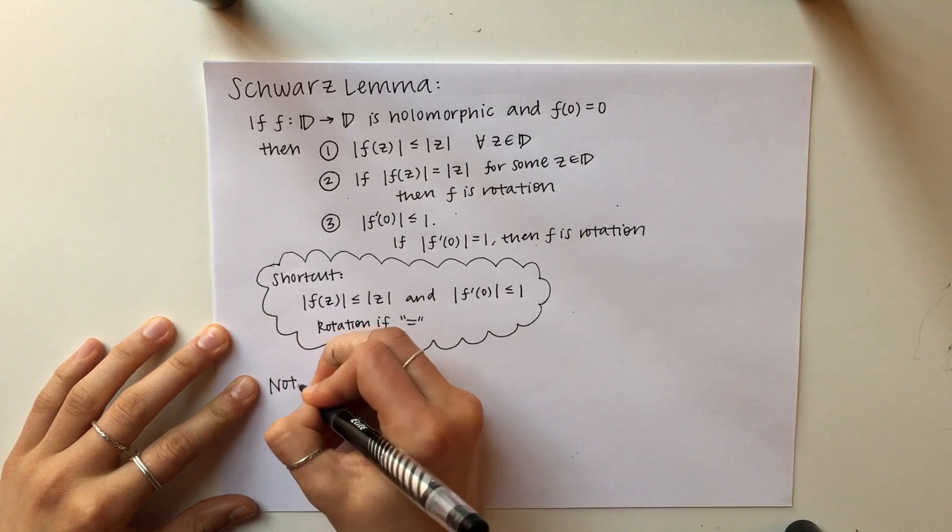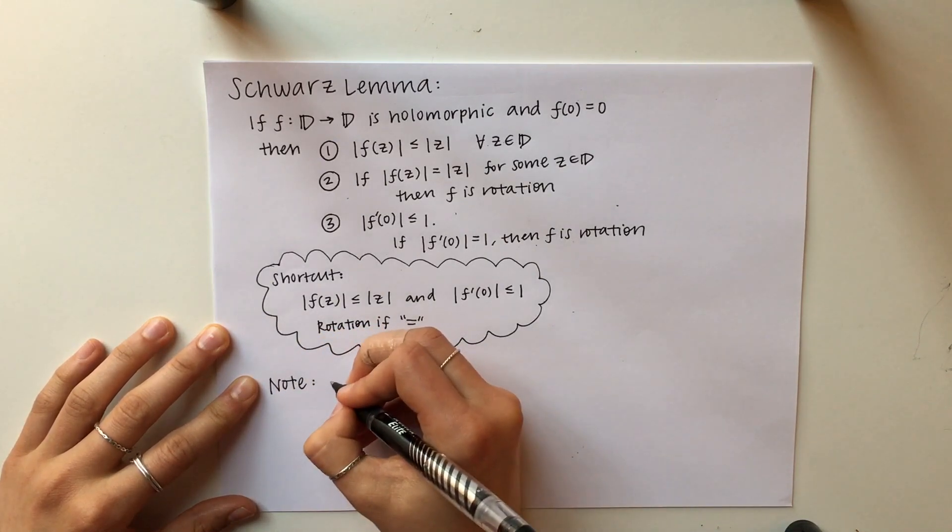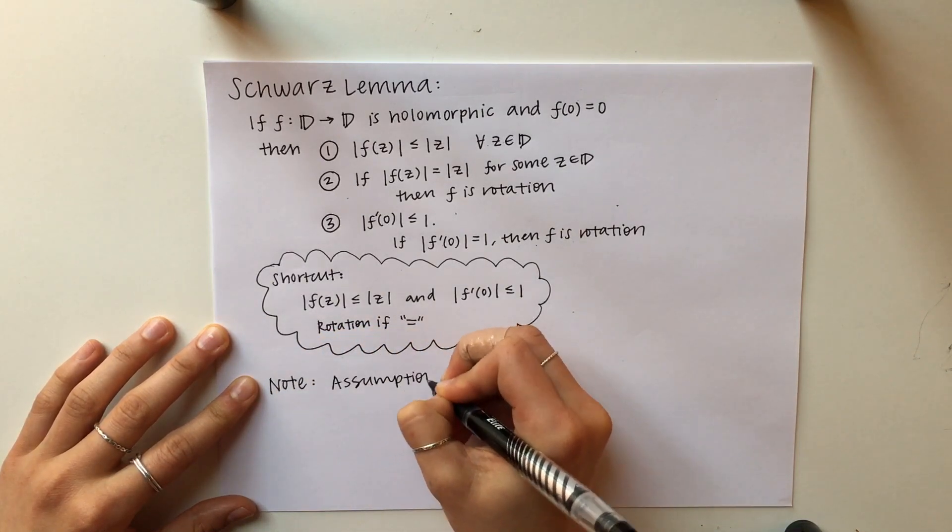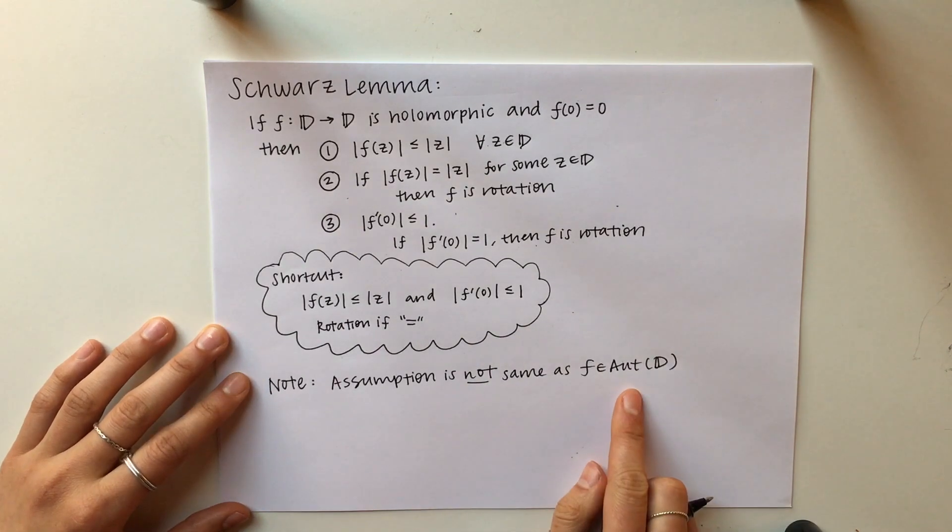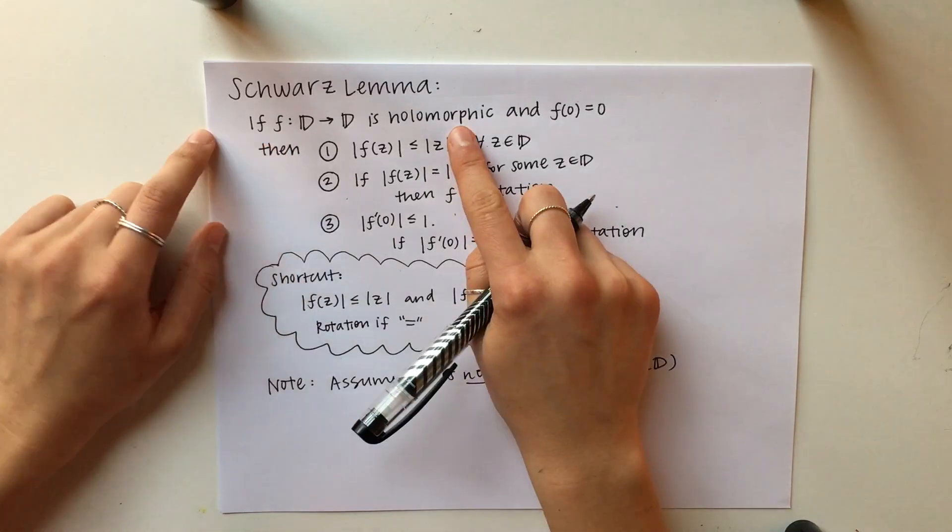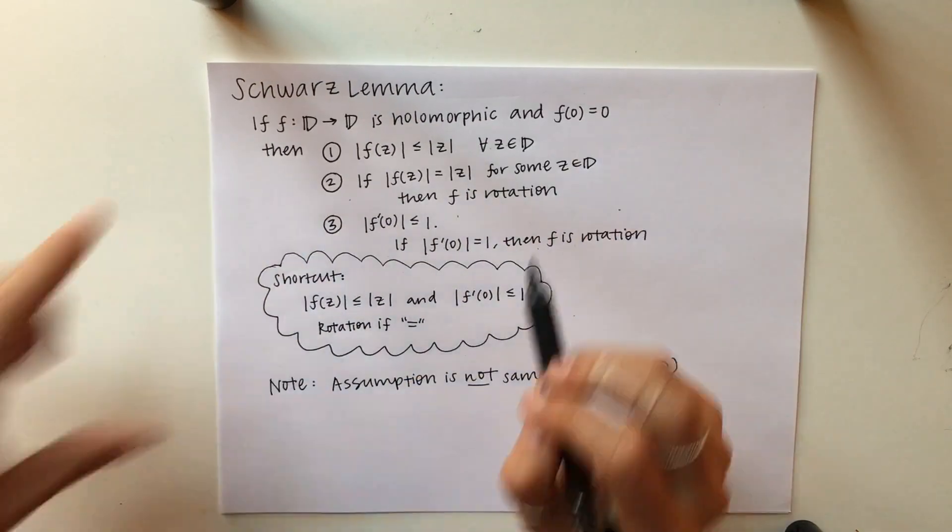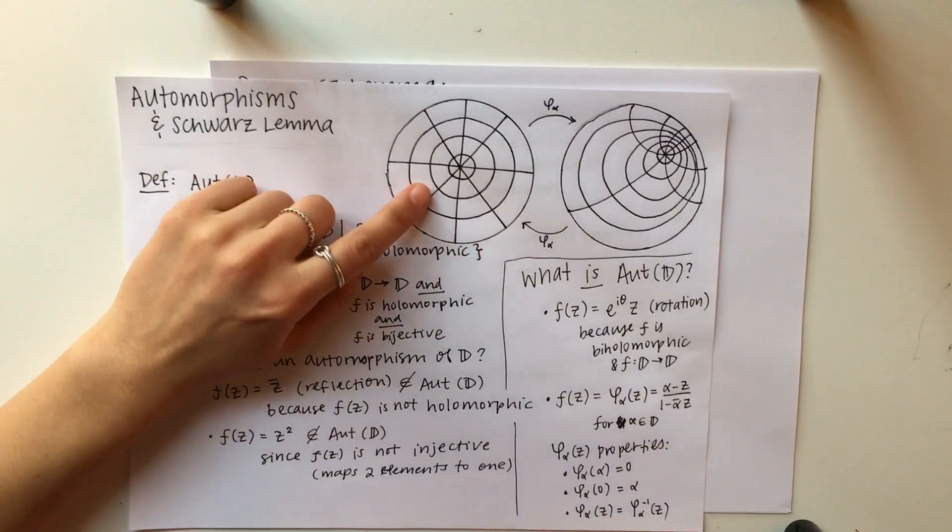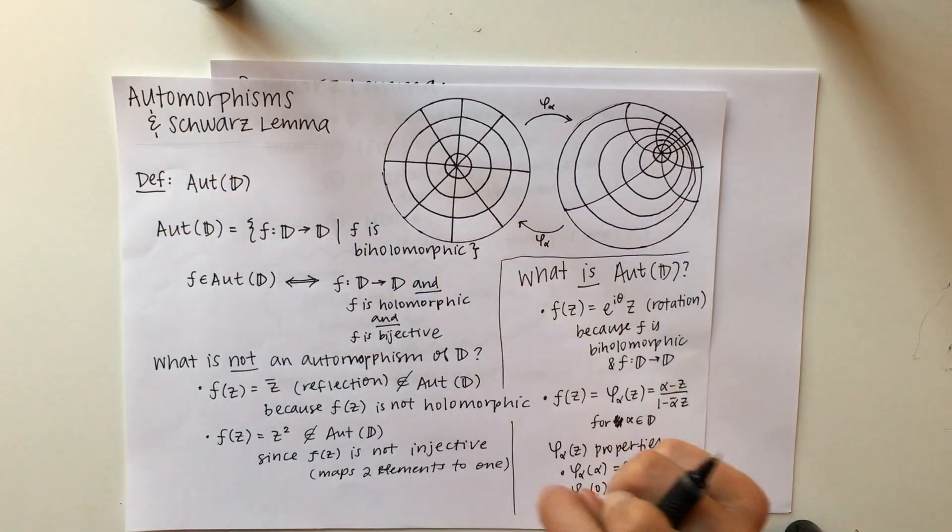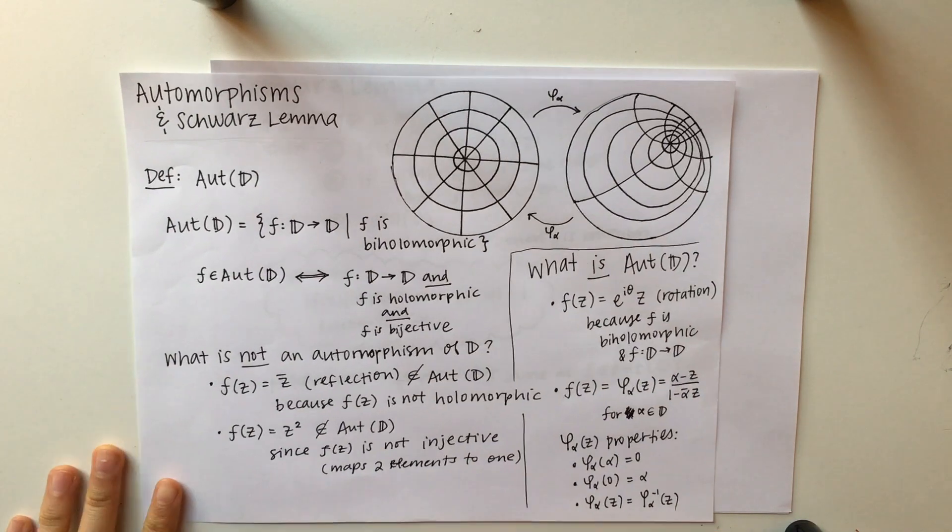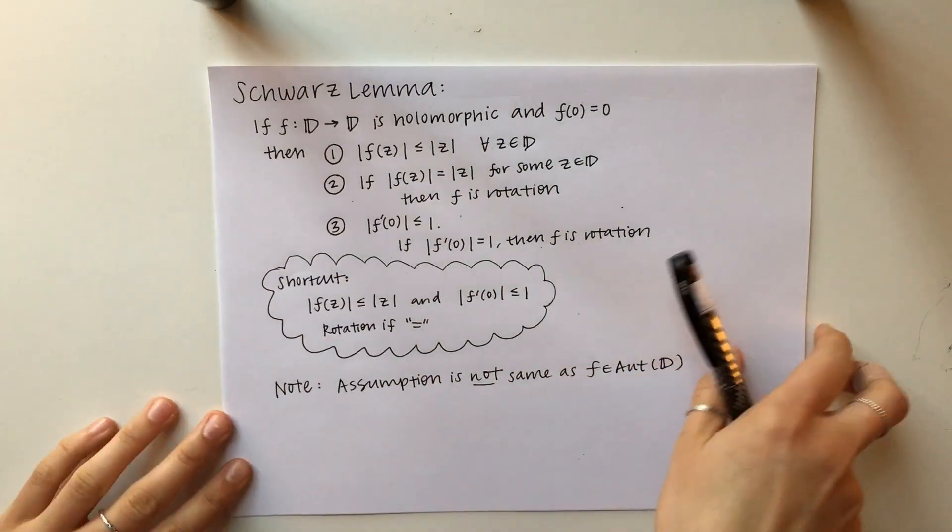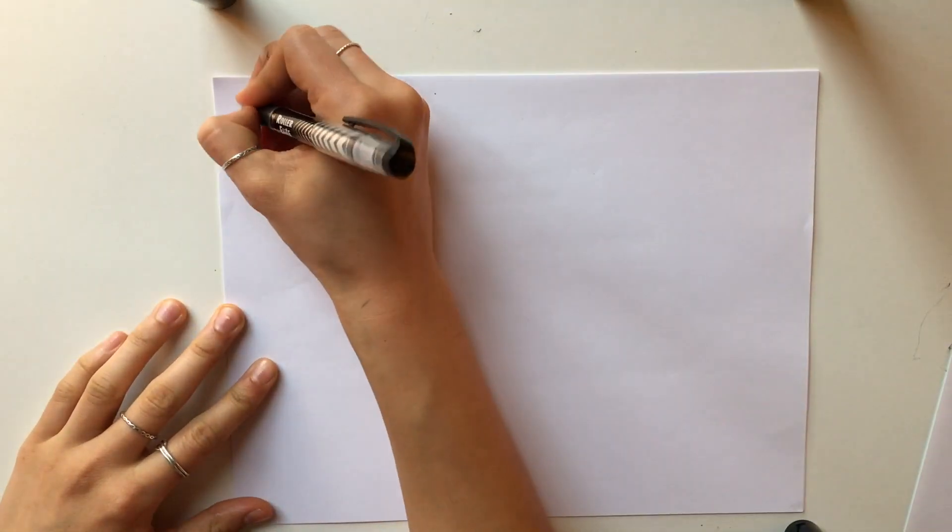One thing to note is that the assumption in the Schwartz Lemma is not equivalent to saying that F is an automorphism, because note that an automorphism implies that F is also bijective, but we don't need that. We do have an additional assumption though that zero maps to zero. So pulling out our picture before, we can see that phi sub alpha is actually a function where we cannot apply Schwartz Lemma because it does not map zero to zero. However, if we do take the composition, then we do have a map from zero to zero.